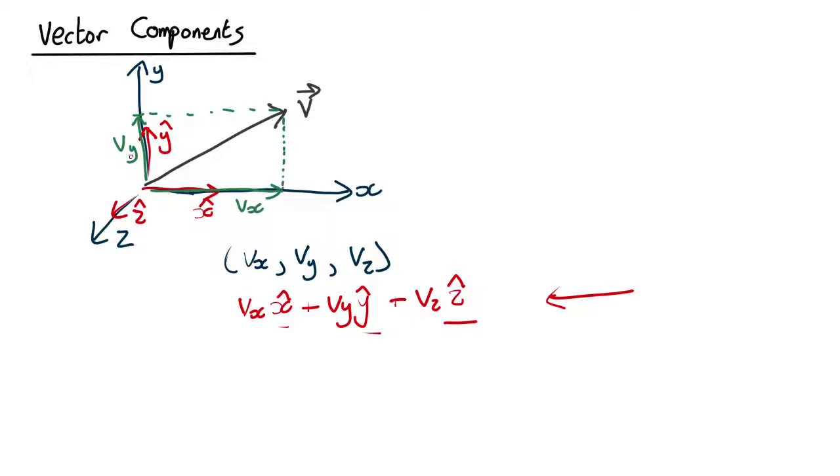Now if we know the angle here, we can use trigonometry. If you remember, cos theta equals adjacent over hypotenuse. In this case the adjacent is vx, and the hypotenuse is the length of v. So vx equals the length of the whole vector times cos theta.